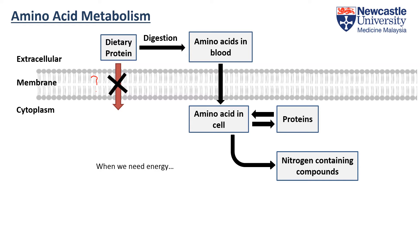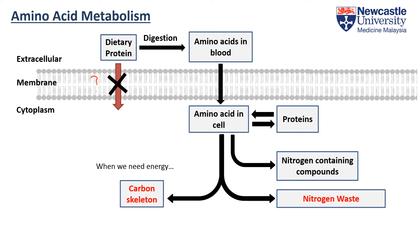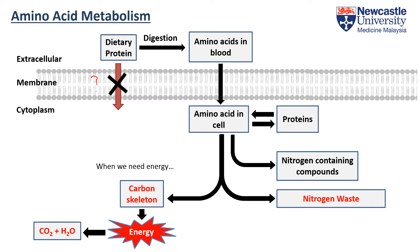But what happens when we need energy, especially during starvation? We split amino acids into their carbon skeleton and the nitrogen waste product, because we can only generate energy from the carbon skeleton, not the waste product. For the nitrogen waste product, it will be converted into urea and eventually excreted in the form of urine.